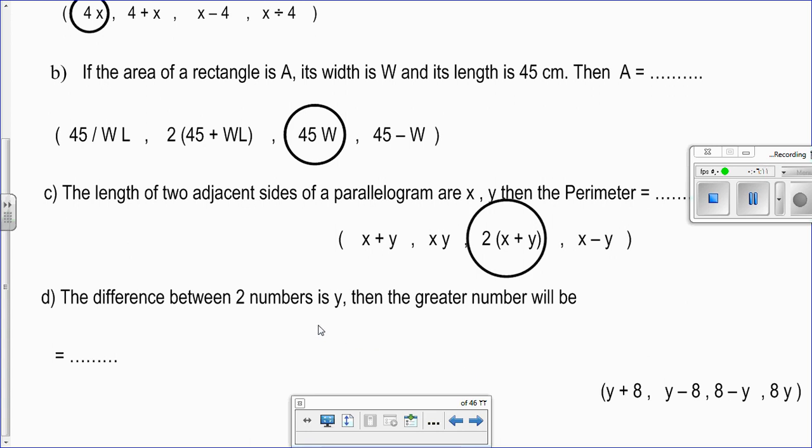Here we have the difference. Difference meaning you will use the plus or minus. I can't use multiplication, so I'll neglect the last choice. And I need the greater number. I can't get the greater using subtraction. This subtraction will make the number smaller. So the answer will be y plus 8. y plus 8 will give you a greater number.